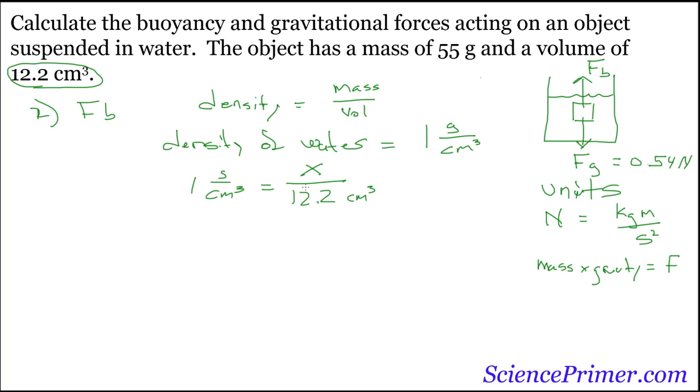And we know 12.2 cubic centimeters of water is displaced. Since this is 1, if we just multiply both sides of this equation by the 12.2, the cubic centimeters are going to cancel and we'll end up with 12.2 grams of water. So that's the mass of the water displaced, converting this to kilograms. And I won't pull the calculator in, but you can check this. So that's 0.0122 kilograms, multiplied by the same acceleration due to gravity, 9.8 meters per second squared. This will give us our answer.